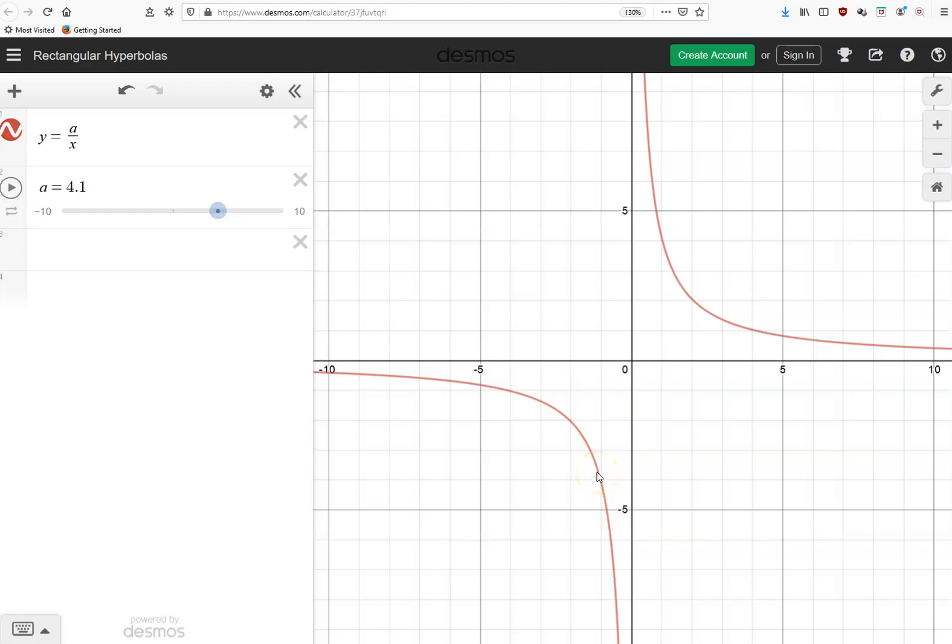So, as you may have suspected or thought, the effect of a, the bigger a becomes the vertical dilation away from the x-axis. So the bigger a is, the more the graph moves up. That part of the graph moves up. And that part of the graph moves down.